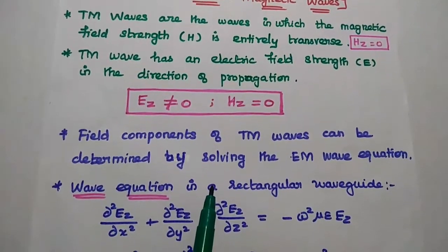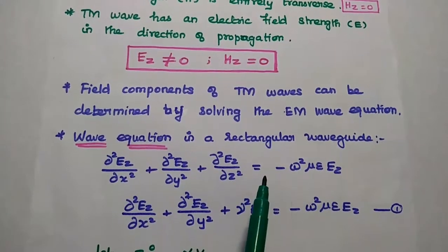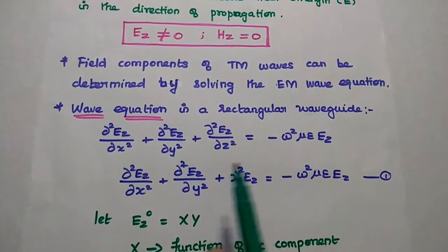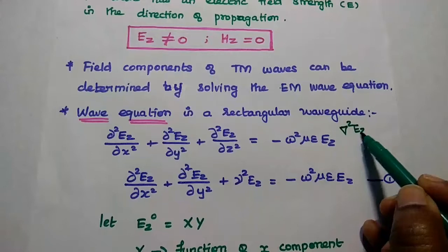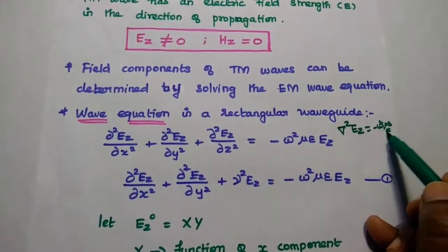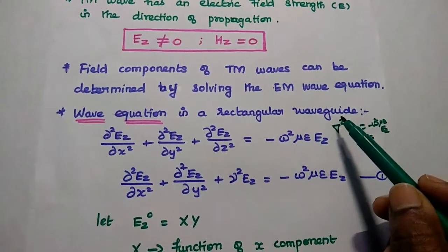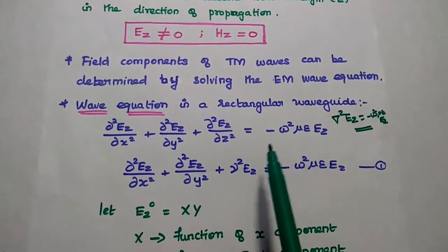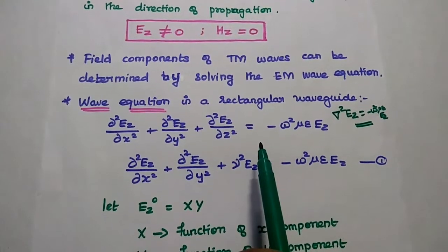Next we are going to find out the field components of the TM waves. It can be determined by using the electromagnetic wave equations. For TM waves, we have to consider the wave equation in terms of electric field because it has only the electric field in the direction of propagation. So del squared EZ is equal to minus omega squared mu epsilon EZ. That is the wave equation in terms of electric field. Del squared means dou squared by dou x squared plus dou squared by dou y squared plus dou squared by dou z squared.